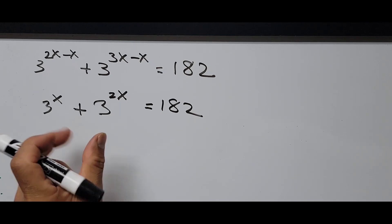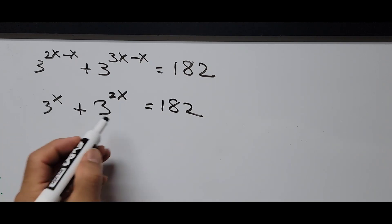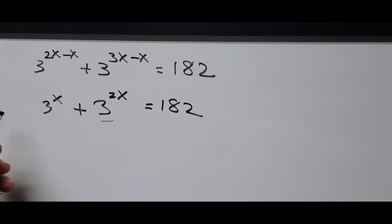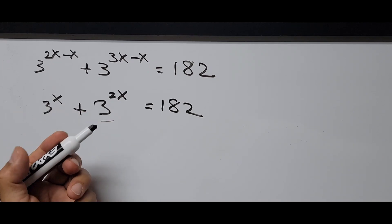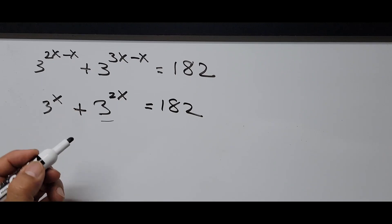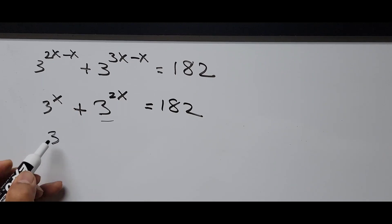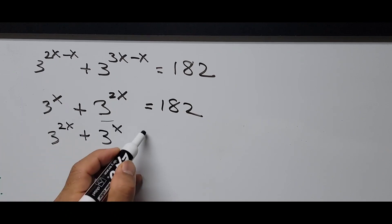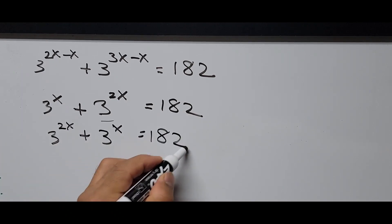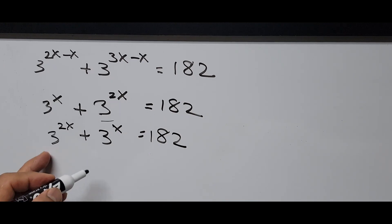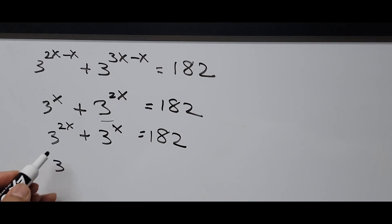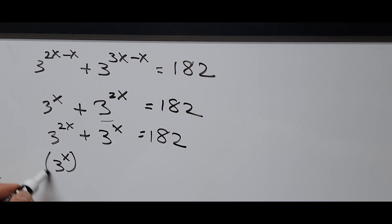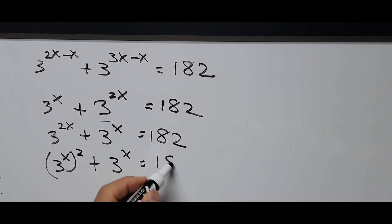I would like to rearrange the terms, putting them in order. Reversing their places, we have 3 raised to the 2x plus 3 raised to the x equals 182. This can also be written as 3 raised to the x, all squared, plus 3 raised to the x equals 182.